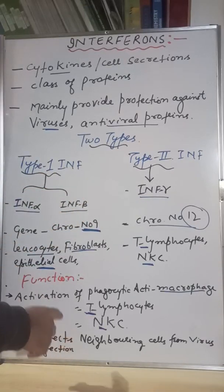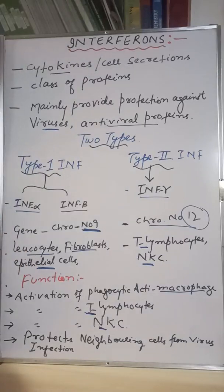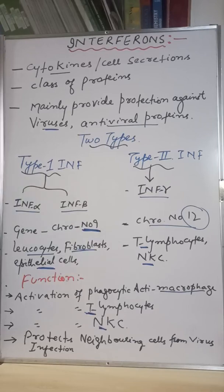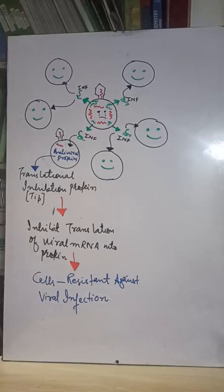Another key function is that interferons protect neighboring cells from viral infection. For example, if a cell in your body gets infected with a virus, that virus-infected cell releases a group of interferons. Those interferons diffuse into the neighboring cells, making them aware of the presence of the virus, so that the neighboring cells can launch a defense mechanism to protect themselves.